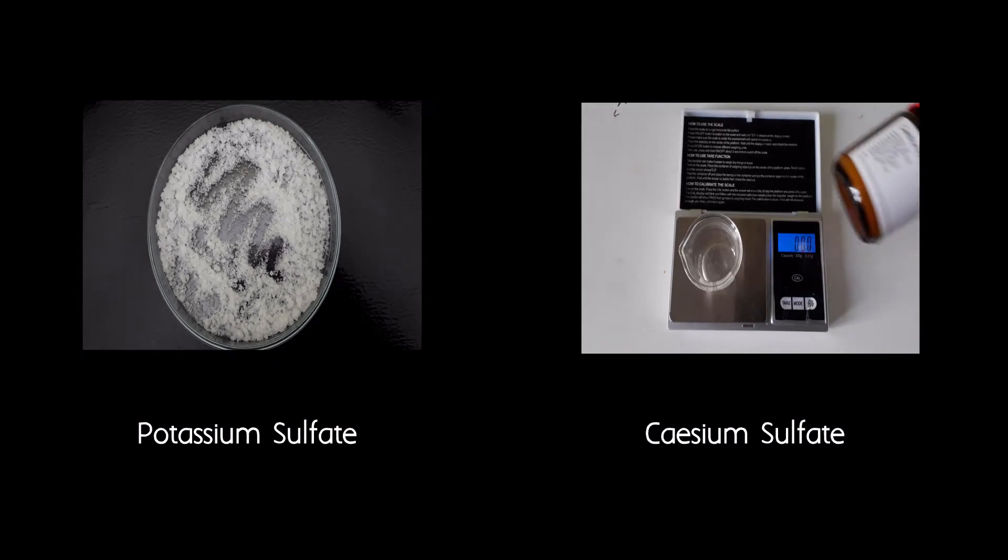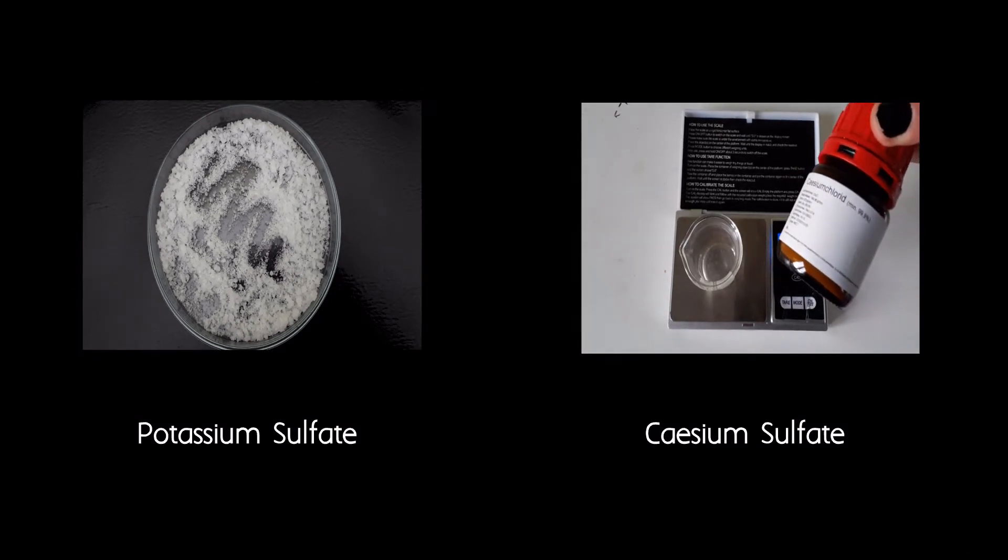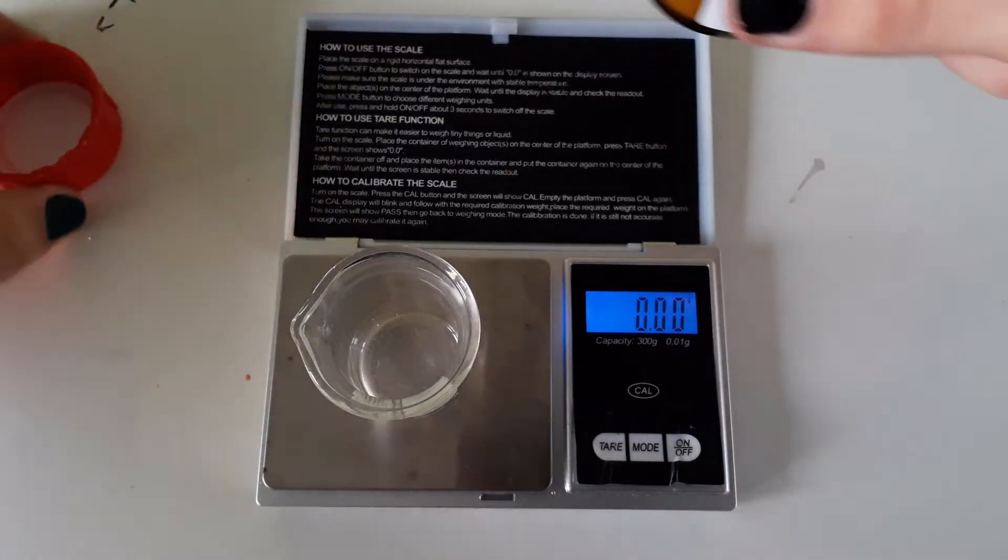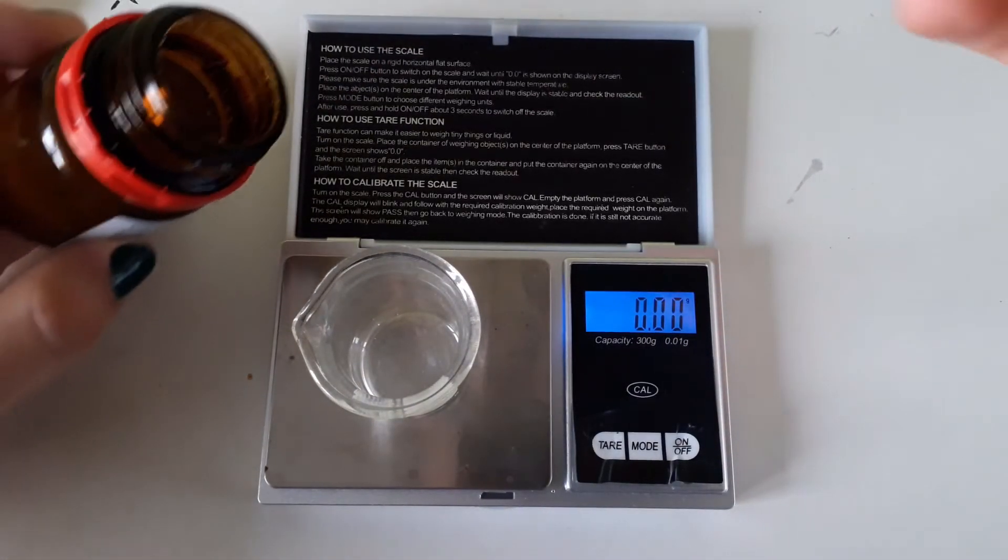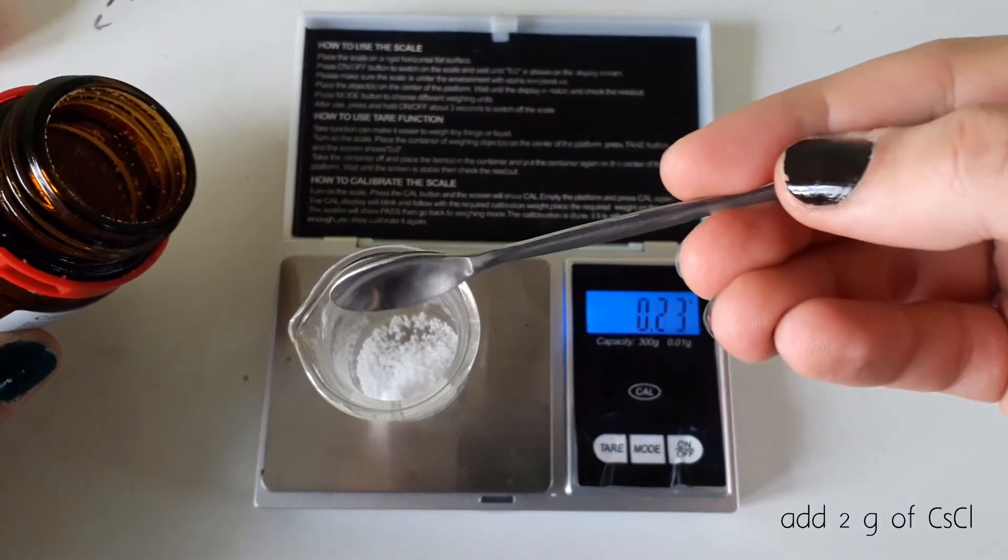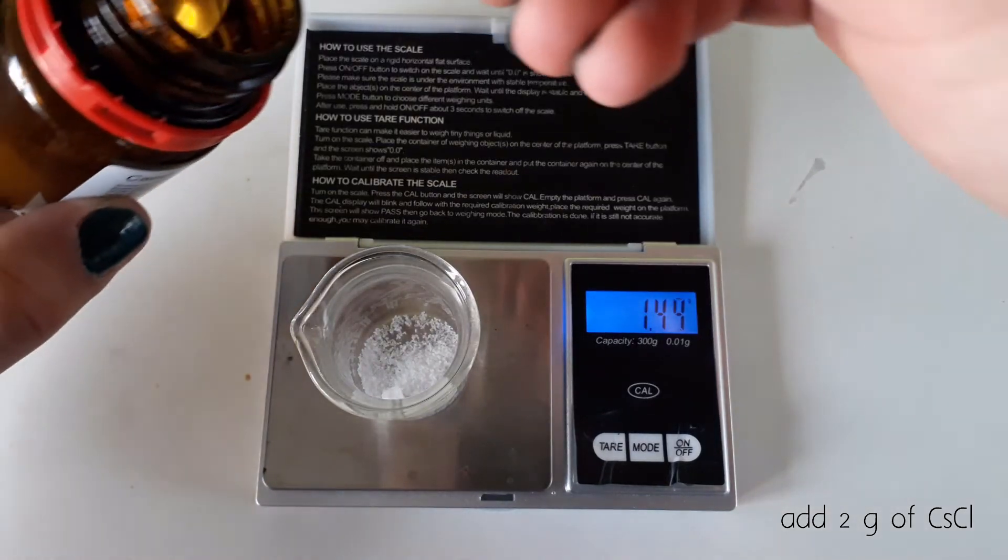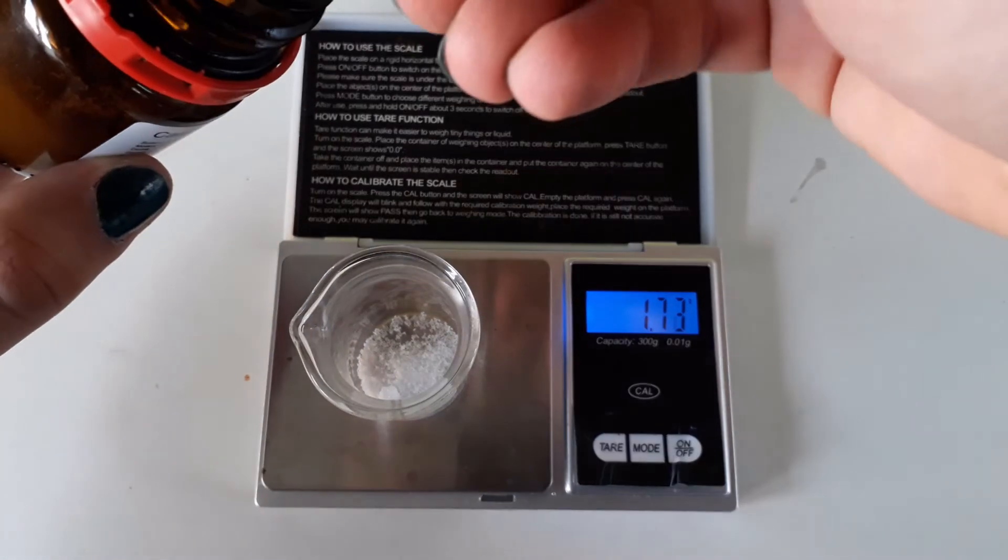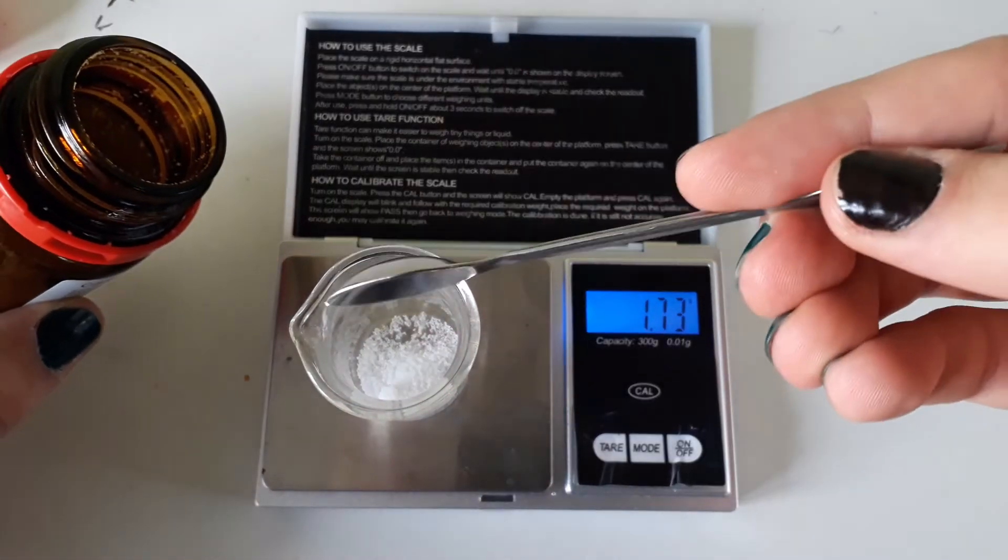For the preparation of cesium sulfate I chose a different route, since I didn't have any cesium carbonate or hydroxide on hand. Instead I just used cesium chloride and sulfuric acid. The cesium chloride reacts similarly to the hydroxide or carbonate, though instead of producing water and/or carbon dioxide, it produces hydrogen chloride gas instead.